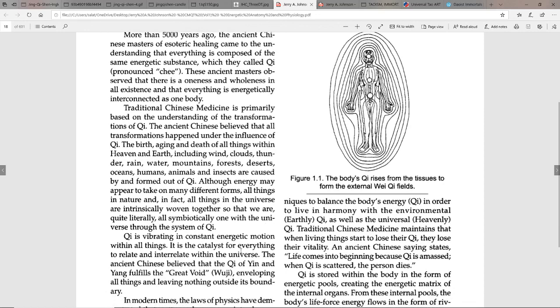Qi is vibrating in a constant energetic motion within all things. It's the catalyst for everything to relate and interrelate within the universe. The ancient Chinese believed that the qi of yin and yang fulfills the great void, and the great void is called Wuji.